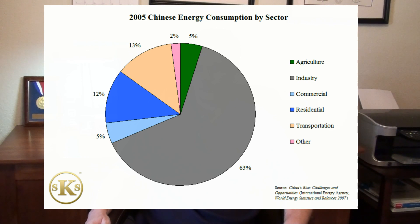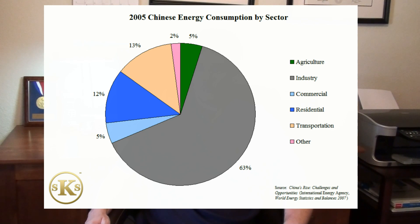In 2005, industrial activity consumed almost two-thirds of China's energy expenditures. Transportation and commercial activity consumed another quarter of the total, while commercial activity and agriculture each used 5% of China's energy. This distribution of energy reflects China's commitment to industrial development.